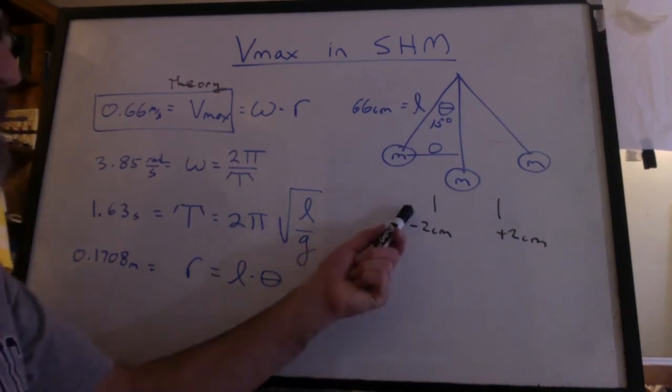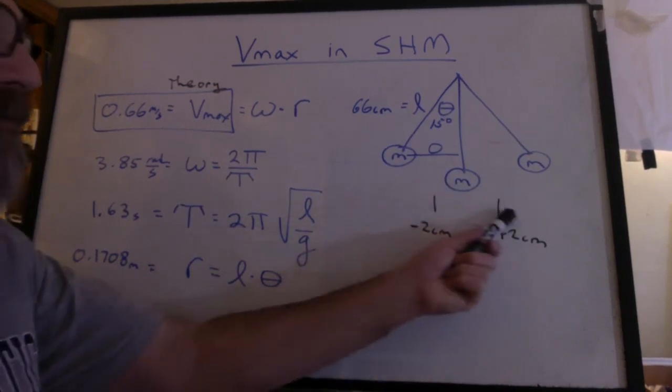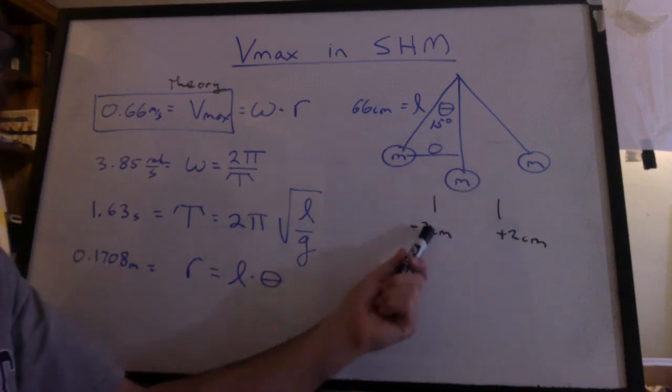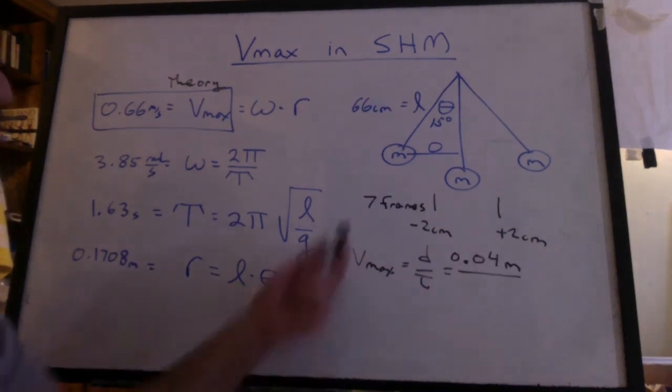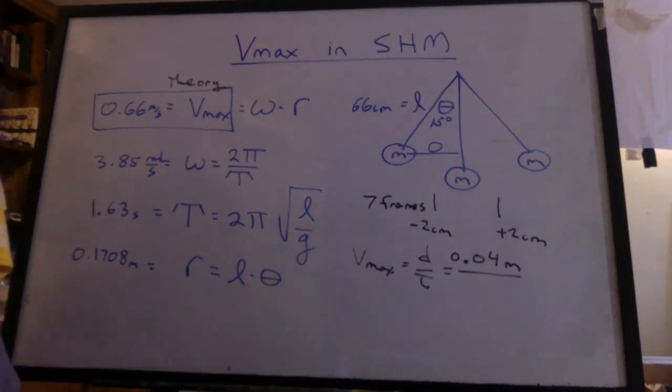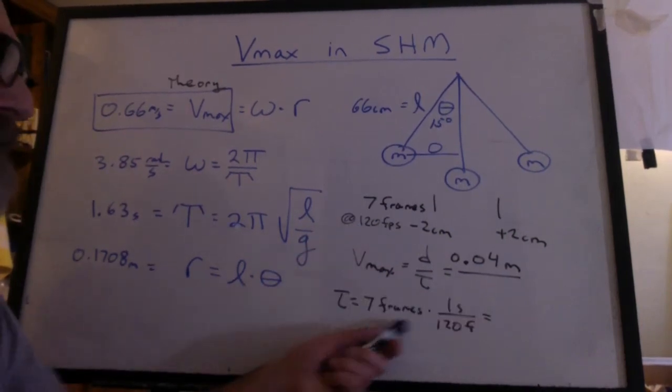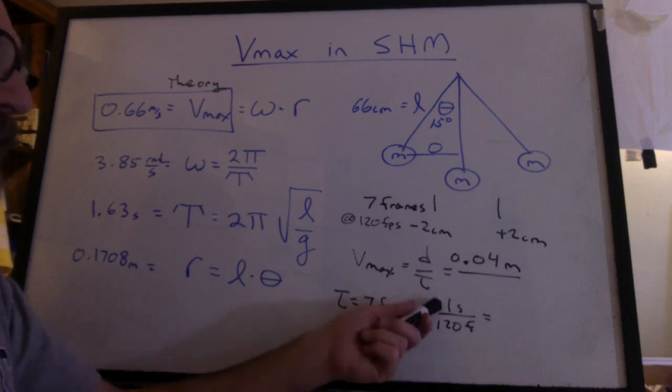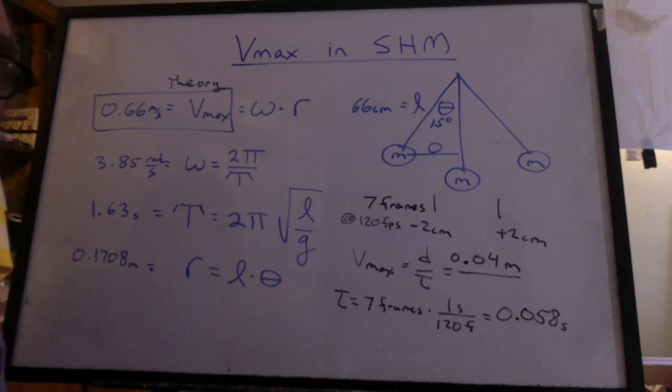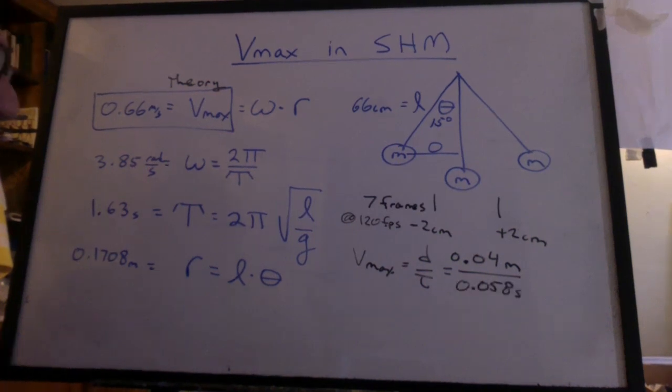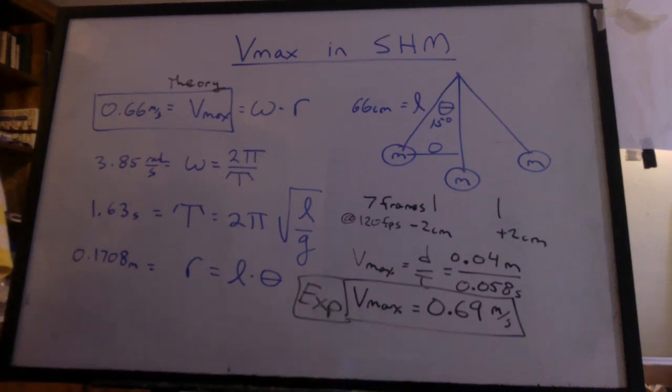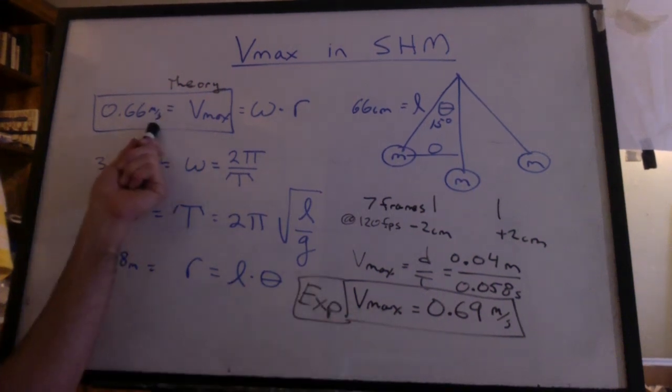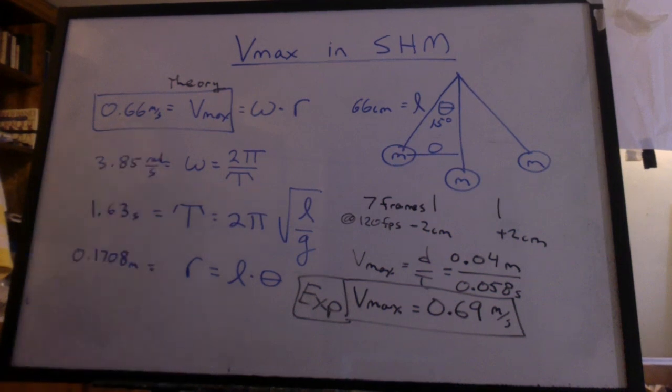To do an experimental check, I can see how long it takes the pendulum to move across a distance near the equilibrium position. Again, it's just distance over time. Let's say it took 7 frames at 120 frames per second. We have 7 frames divided by 120 frames for 1 second. We get a time of 0.058 seconds. If I do the math, I get 0.69 meters per second. And that's my experimental check, which is pretty close to the theoretical. And that's the way we do it.